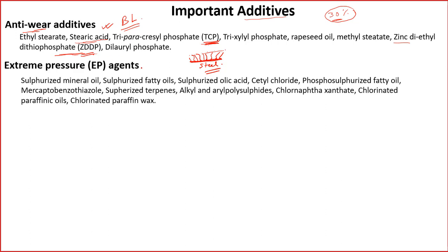Another additive type is extreme pressure agents, such as sulfurized fatty acids and chlorinated paraffin wax. These are added for situations where pressure is extremely high — for example in gear applications and cutting operations — where very high pressure and a lot of sliding take place.